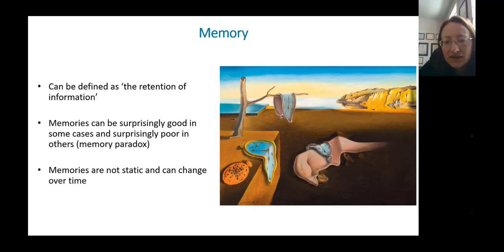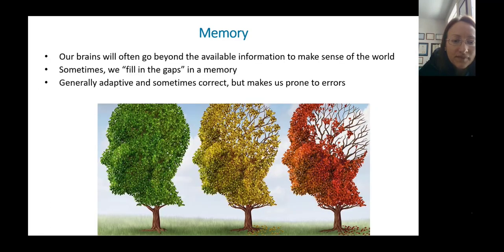Our memories can be very good in some cases and very poor in others. That's paradoxical. Overall, the constructive characteristic of memory, the way it changes and shifts, is adaptive. Otherwise, we wouldn't have that characteristic.